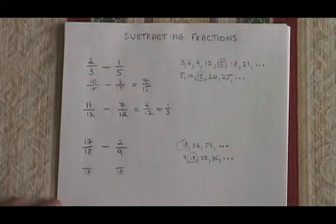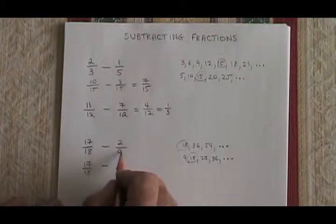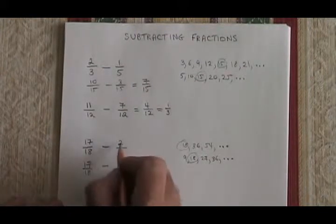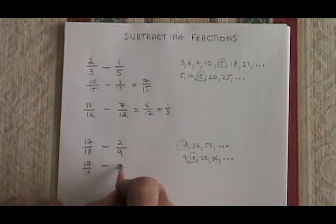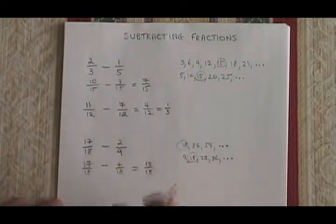That doesn't matter. We can still go about it the same way. 17 over 18 stays the same. The 9 has to be multiplied by 2 to give 18, so the 2 has to be multiplied by 2 to give a 4. 17-18 minus 4-18 is equal to 13-18, and we have our answer.